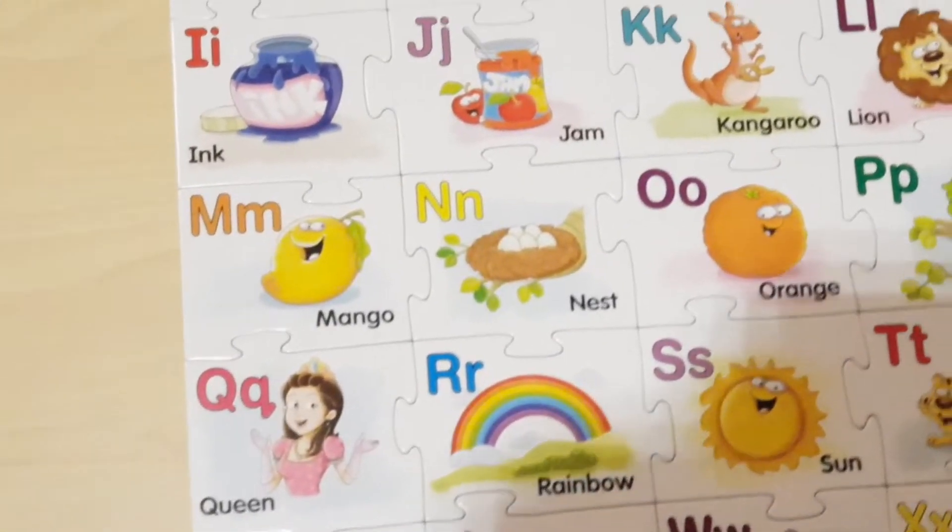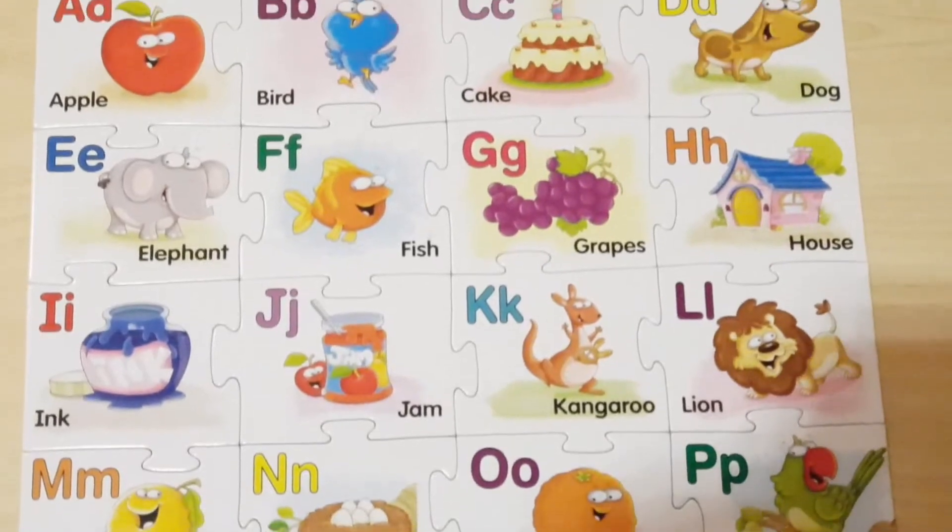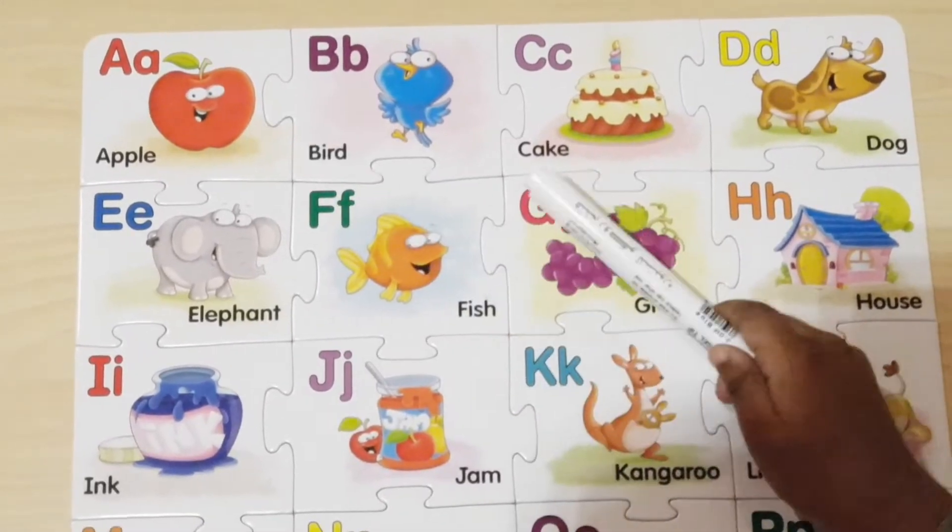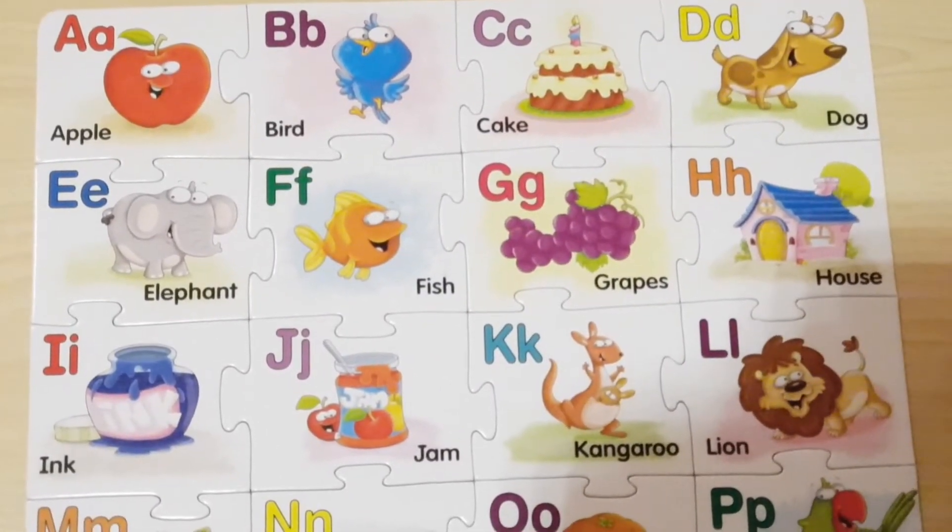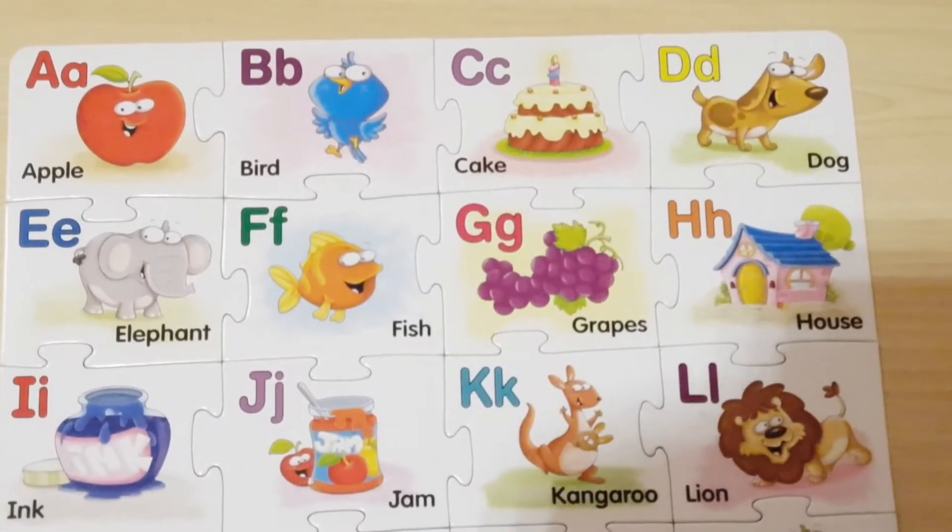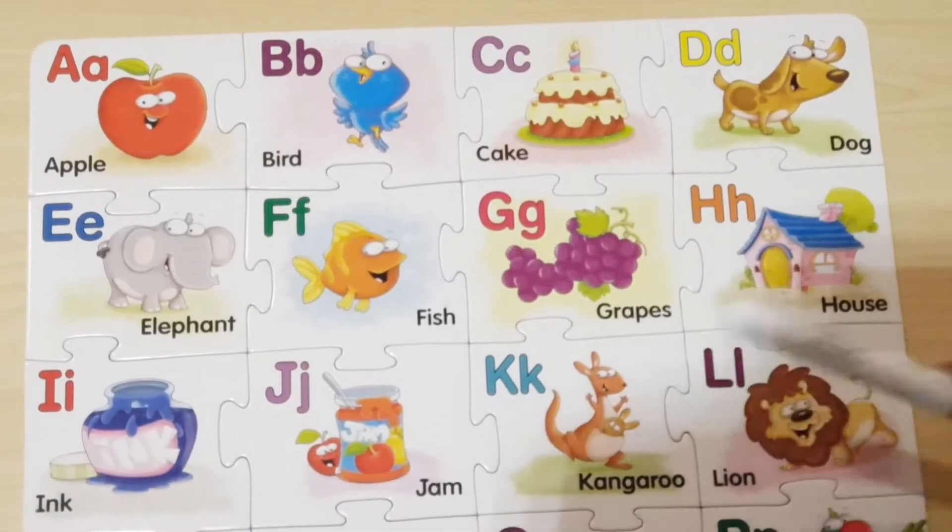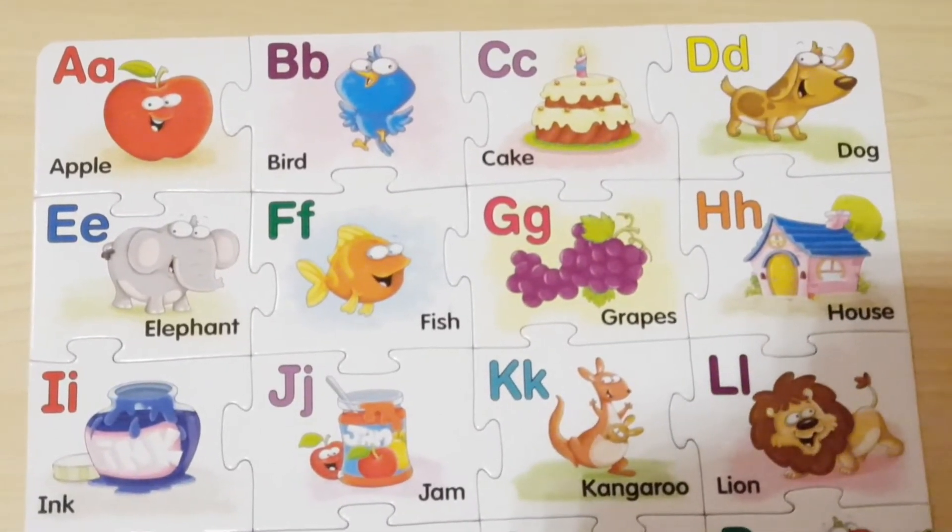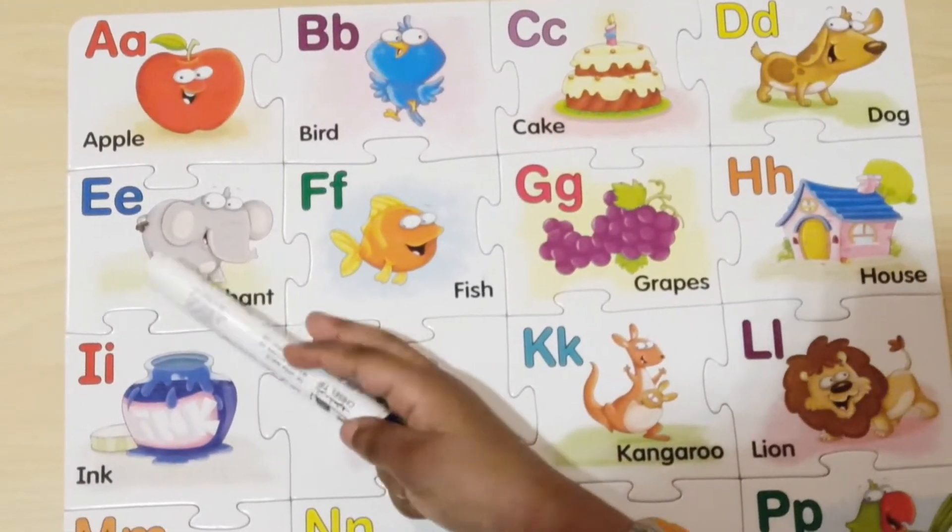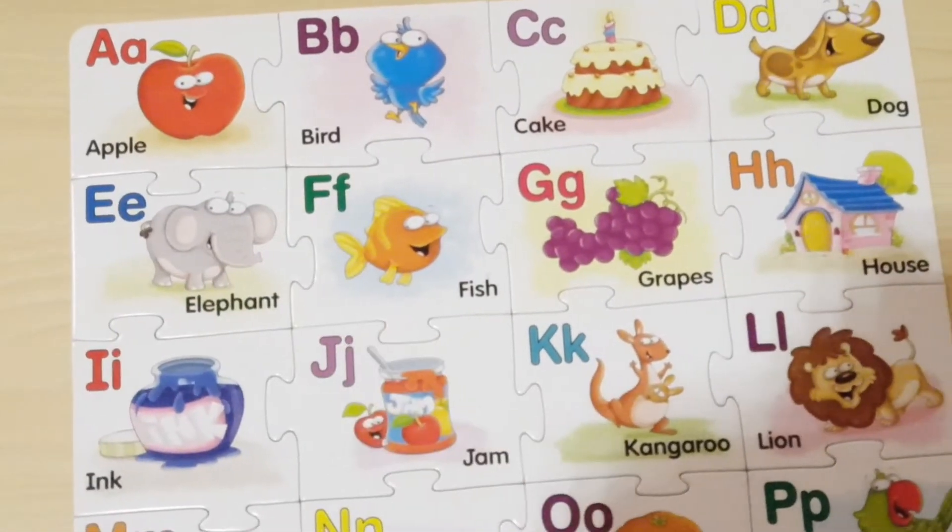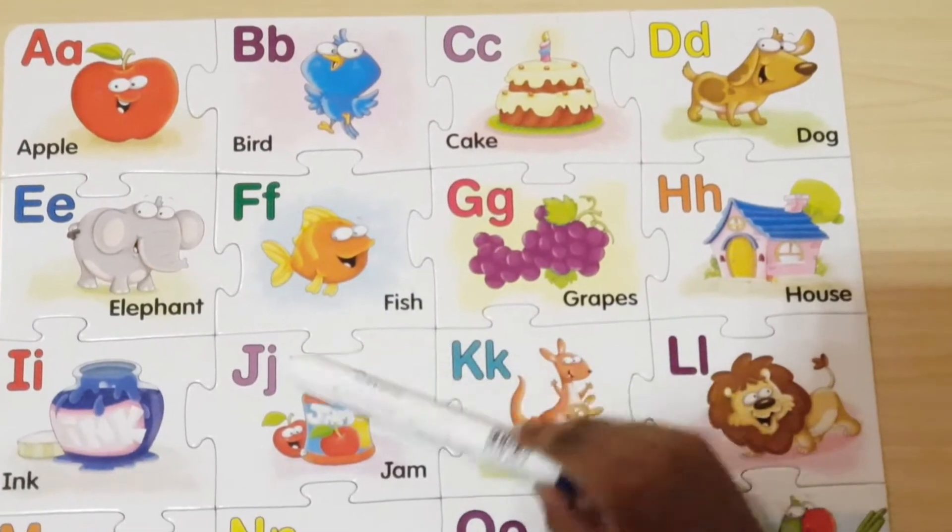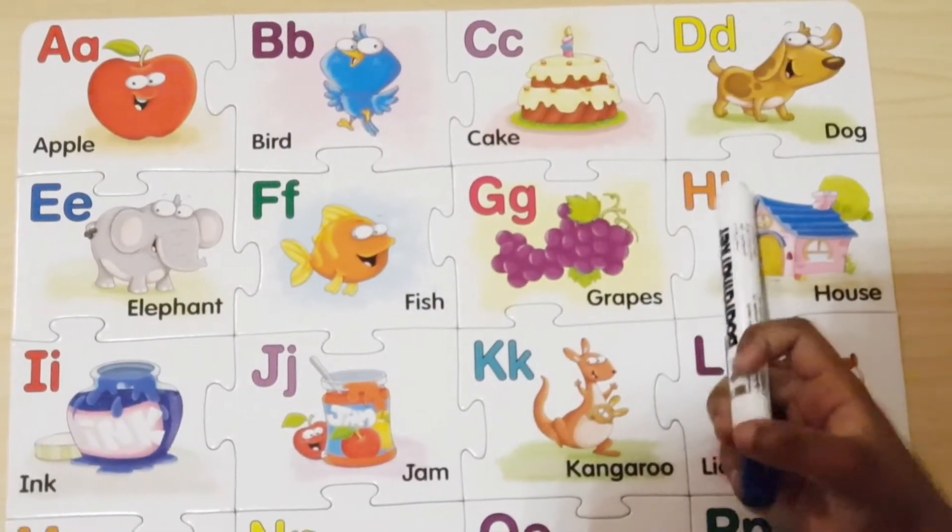So let's go back and say the letters and their sounds and what they stand for. A sounds A as in Apple. B sounds B as in Bird. C sounds K as in Cake. D sounds D as in Dog. E sounds E as in Elephant. F sounds F as in Fish.